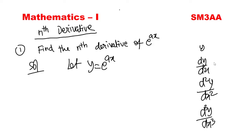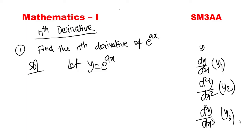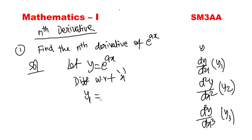So instead of writing dy/dx each time, we call it y1. y1 differentiated onwards. Second derivative is y2, third derivative is y3. So y1, y2, y3 — one time differentiation, two times, three times. That's why we call y differentiated with respect to x as y1.